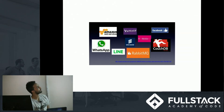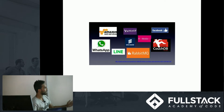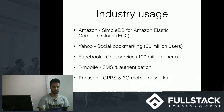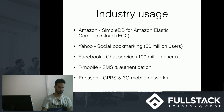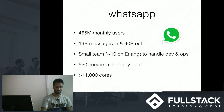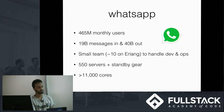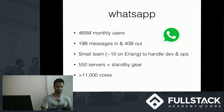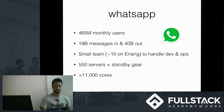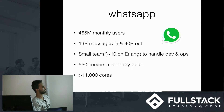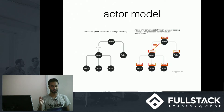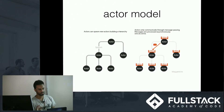Some companies that have used Erlang include Amazon, WhatsApp, Line, RabbitMQ, CouchDB, T-Mobile, and Facebook. WhatsApp is a pretty famous example — 19 billion messages in, 40 billion out, with a small team of just 10 people on Erlang. It's pretty amazing what Erlang is capable of.